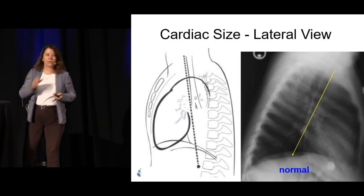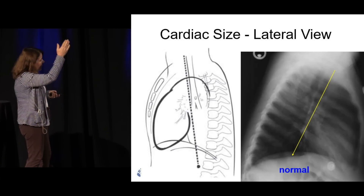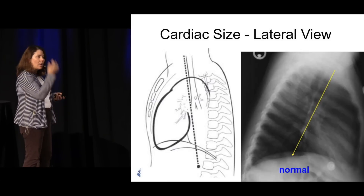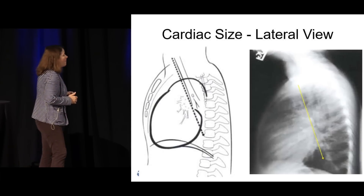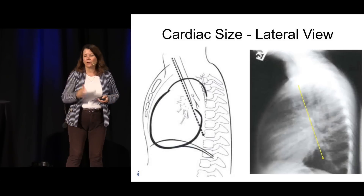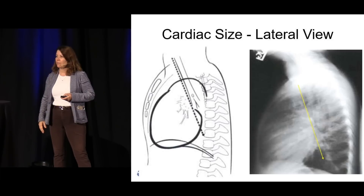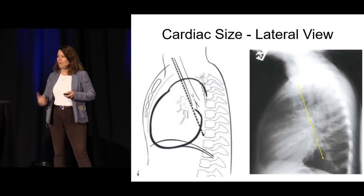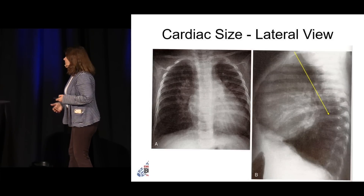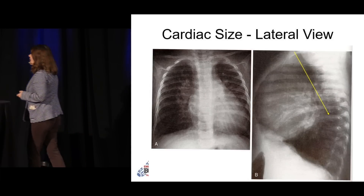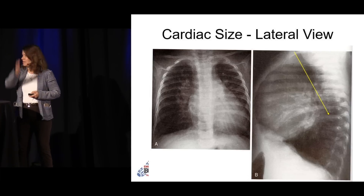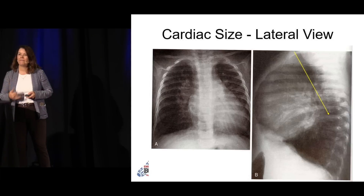Sometimes it's hard to see the trachea on the lateral, but if you can, you want to run that line down — you want to see it bisecting the diaphragm. If it's starting to encroach on that anterior tracheal line, you run it all the way down and it's starting to bisect the vertebrae, that's a more generous heart — you may be dealing with congenital heart disease. If it pushes backwards and is encroaching on the vertebrae, not bisecting the diaphragm, a very generous heart is kind of pushing that backwards.